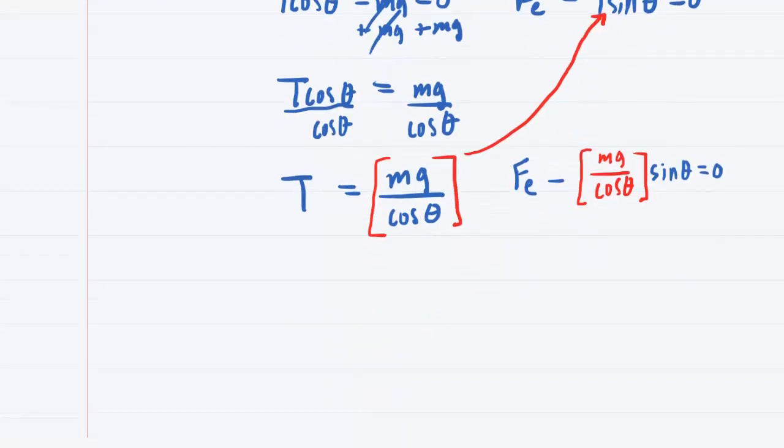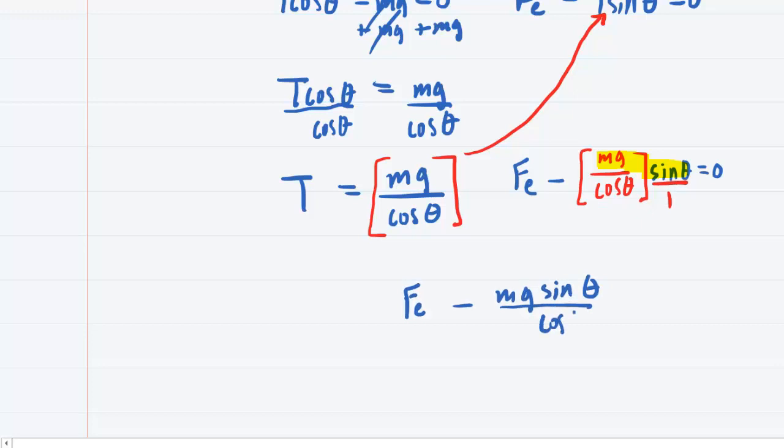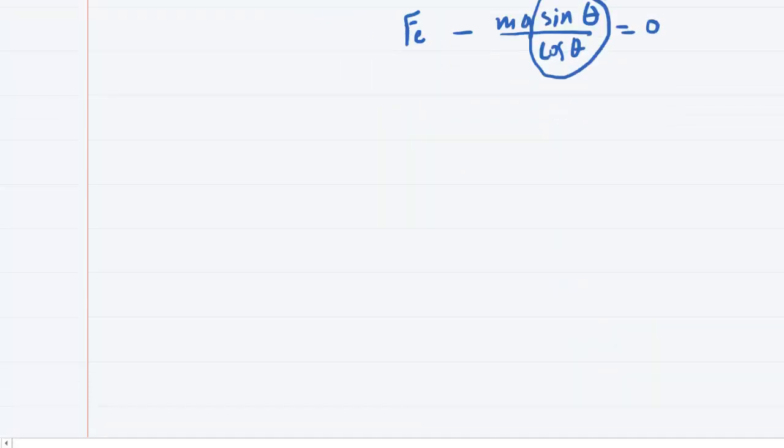Now, we can look carefully, and we're going to go ahead and multiply the numerators here. If you'd like, you can put the sine of theta over one. So now you would have the Fe minus mg sine theta over cosine theta is equal to zero. We of course know that sine theta over cos theta is equal to tangent of theta, so we can simplify this further by just doing Fe minus mg tangent of theta equals zero.